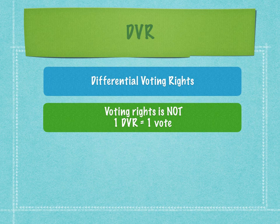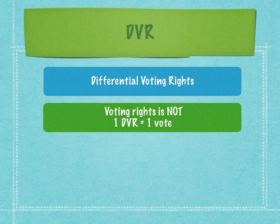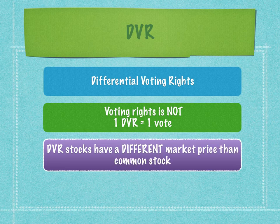In the United States they have different types of stocks like Class A, Class B, and Class C stocks. In India we have common stock and DVRs. So voting rights in the case of DVR mean that one vote is not equivalent to one DVR — the voting ability of the DVR holder is very much compromised. DVR stocks therefore have a different market price compared to common stock.